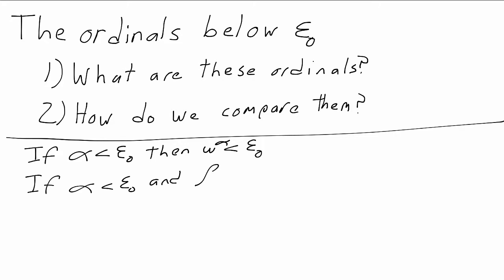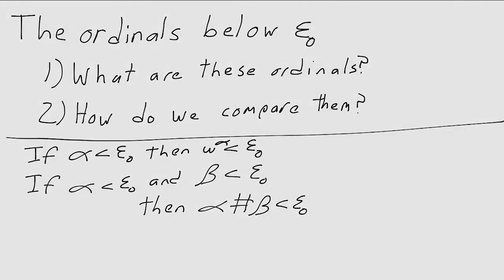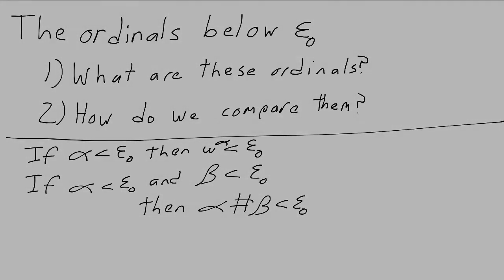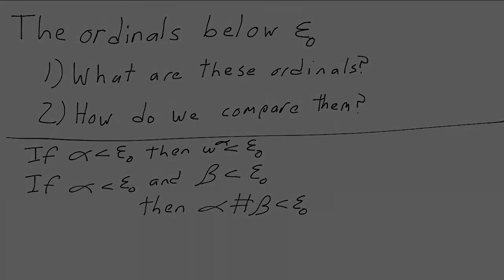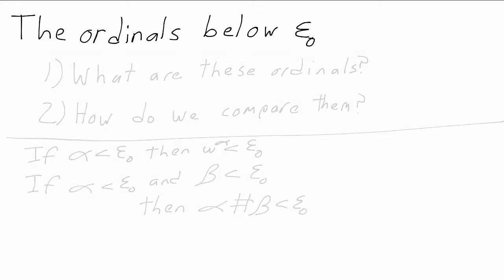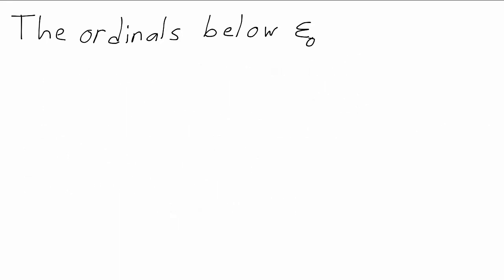Whenever we have two ordinals, we can add them to get another ordinal. And it turns out that if we start with zero, these two operations give us all the ordinals we want. Since we have zero, we also have omega to the zero, which is the ordinal we usually call one.